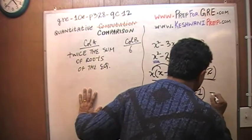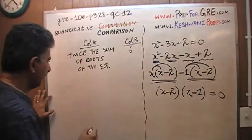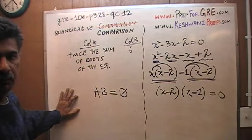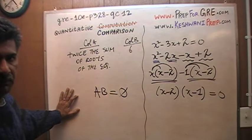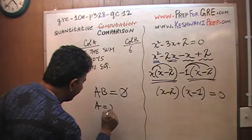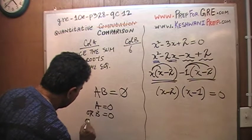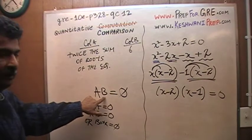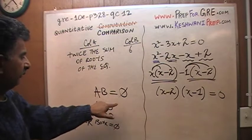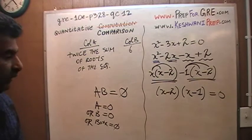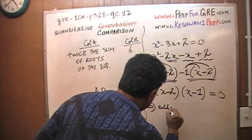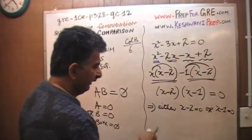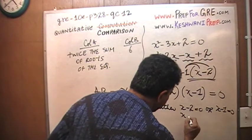All of that equals 0. So we have (x minus 2) common in both terms: (x minus 2)(x minus 1) equals 0. If I tell you two quantities A and B multiply to give 0, either A equals 0, or B equals 0, or both equal 0. So either x minus 2 equals 0, giving x equals positive 2, or x minus 1 equals 0, giving x equals positive 1.